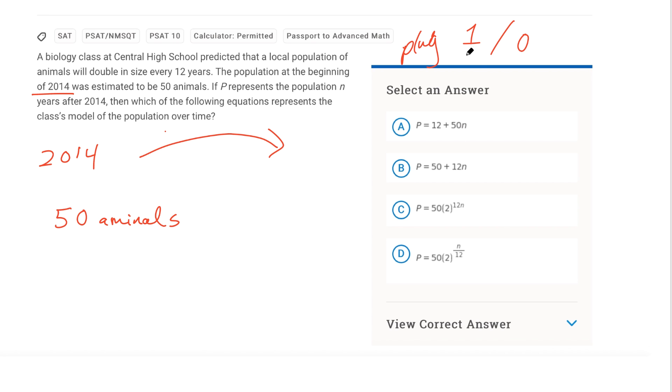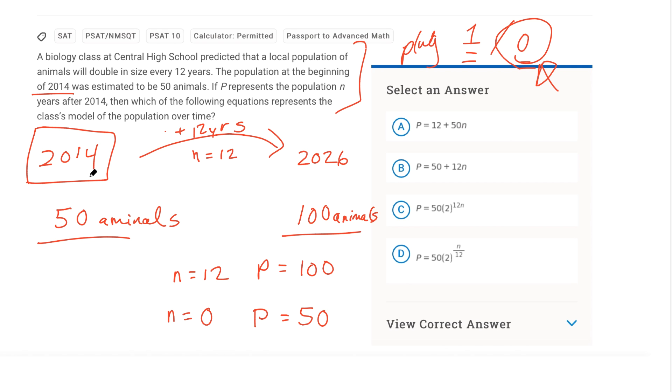So if I know this, the next thing I'm going to do is I'm going to step out one generation. So I'm saying plug in one or zero. I also, with this exponentially kind of stuff, and I know this is exponential because I'm experienced with this, but even if you don't, step forward one generation. So if I add 12 years, then that's 2026, and then in 2026 I'm going to have 100 animals. So P represents the population n years after 2014. So here n actually equals 12, not 1, but that's okay. Then which of the following equations represents the class's model of the population over time? So I know a few things here. I know when n equals 12, P equals 100. I also know when n equals 0, P equals 50. So this is my plug in zero.